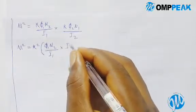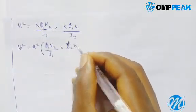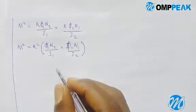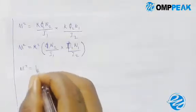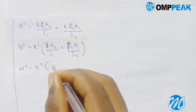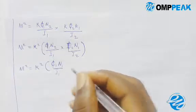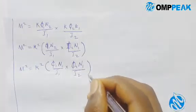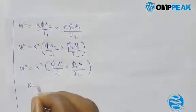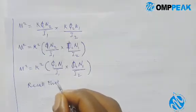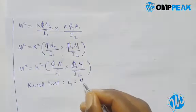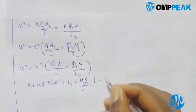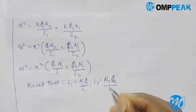So M squared equals k squared, open bracket, φ1·N1 over i1, times φ2·N2 over i2. Recall that L1 equals N1·φ1 over i1, and L2 equals N2·φ2 over i2.